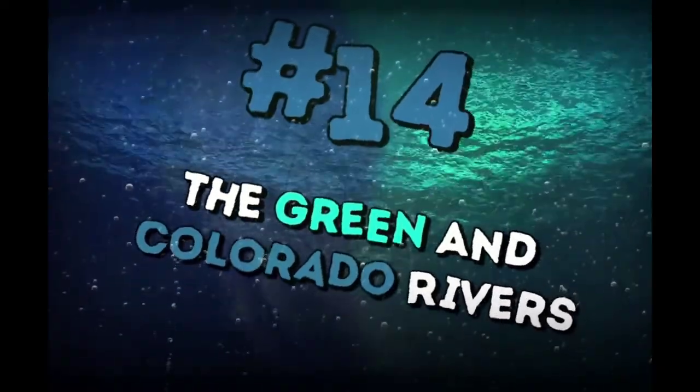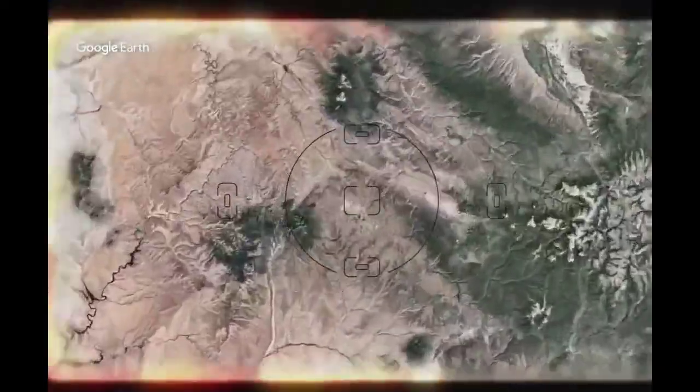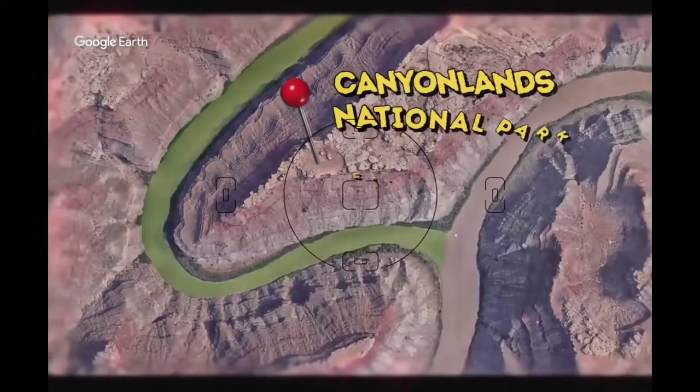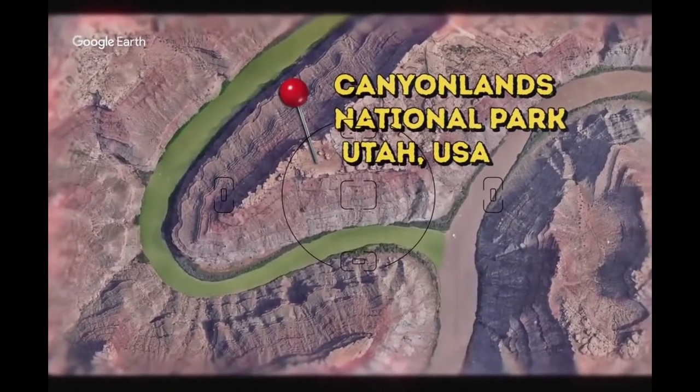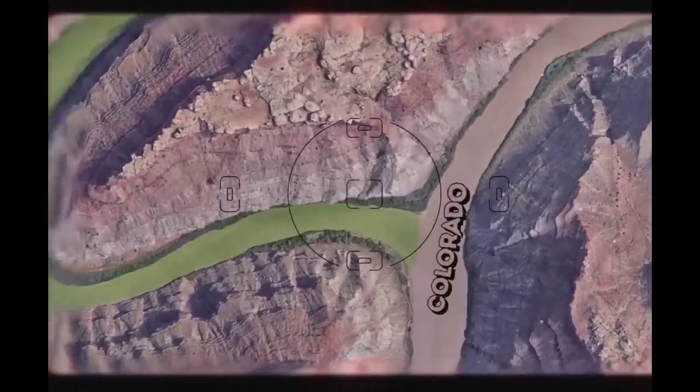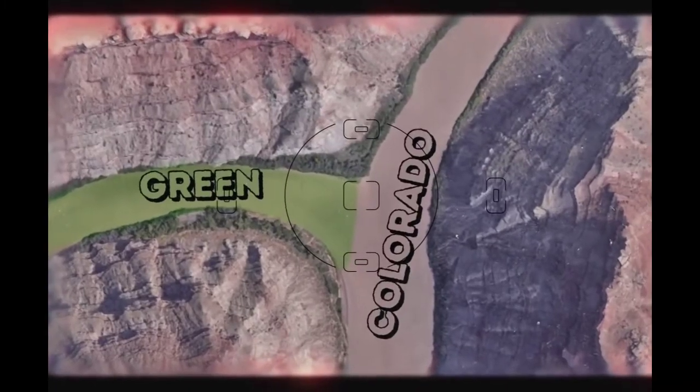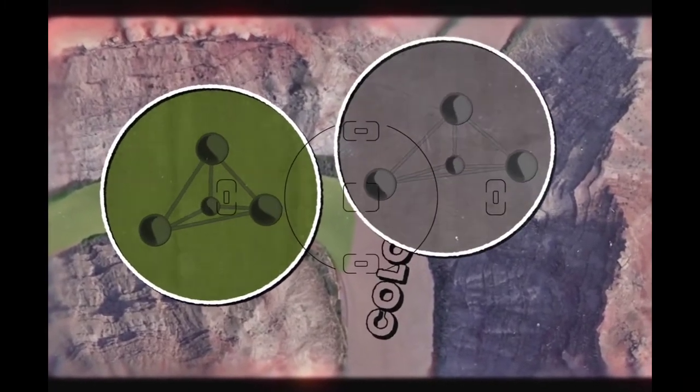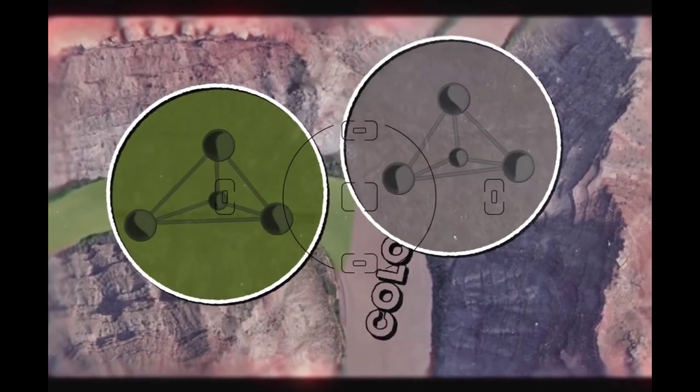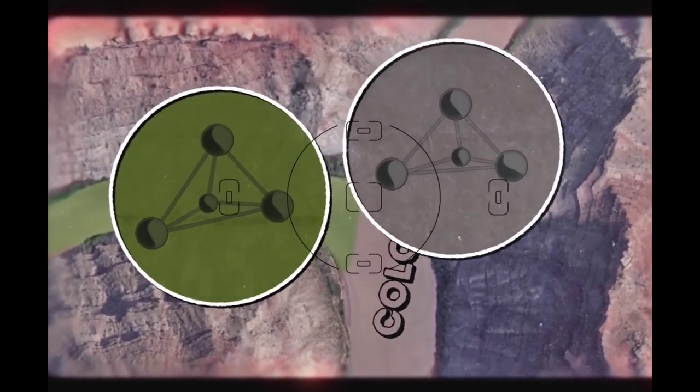The Green and Colorado rivers meet at Canyonlands National Park in Utah, USA. Colorado is brown and Green is green. The colors of these rivers go through rocks with different chemical makeup. That's why they have such a big contrast of colors.